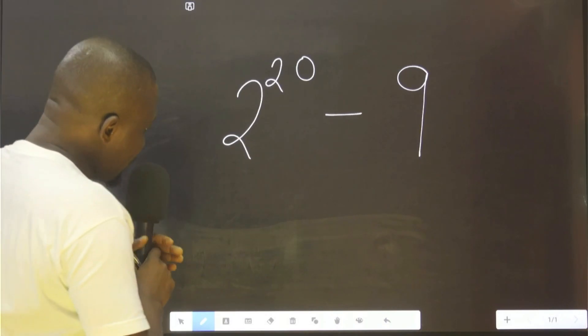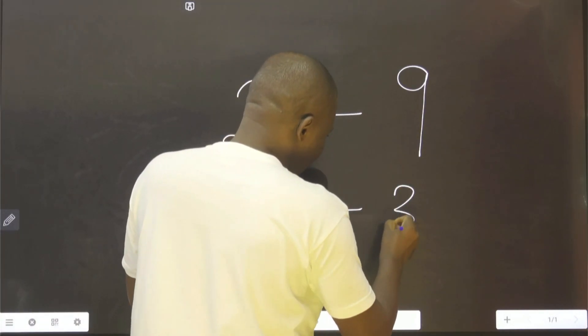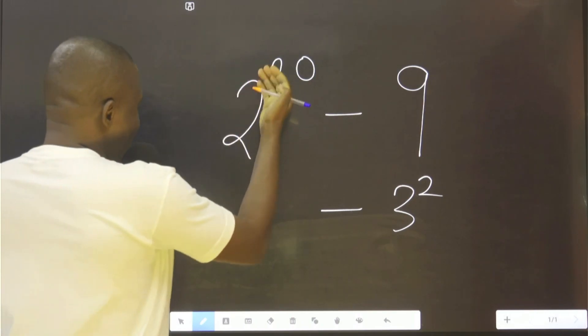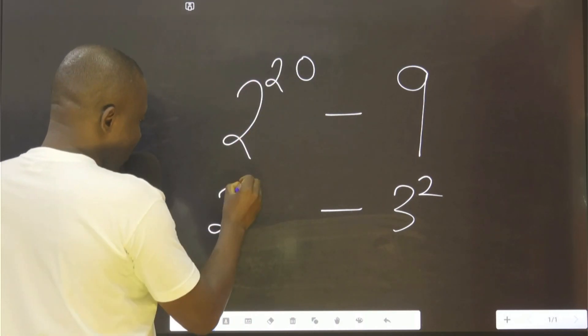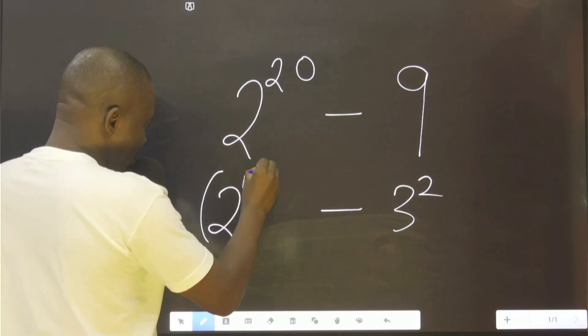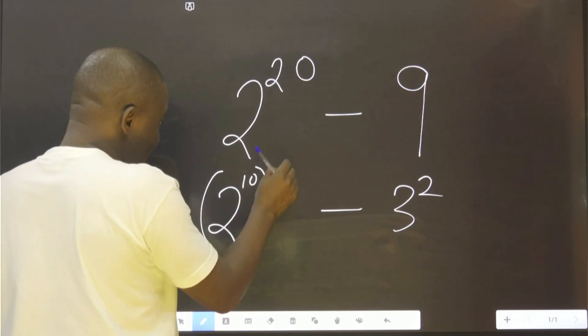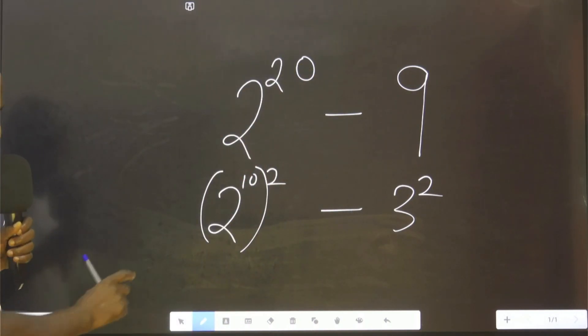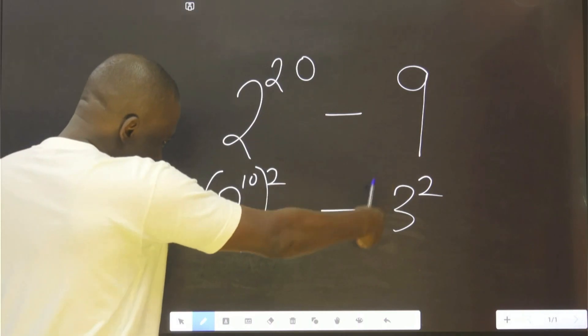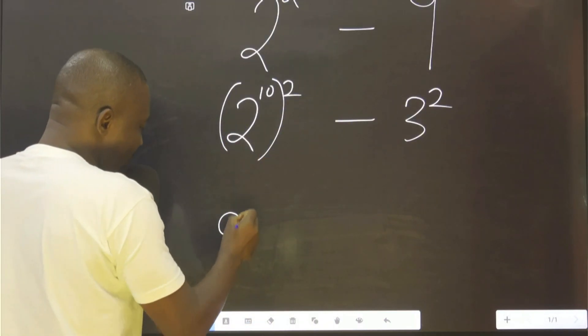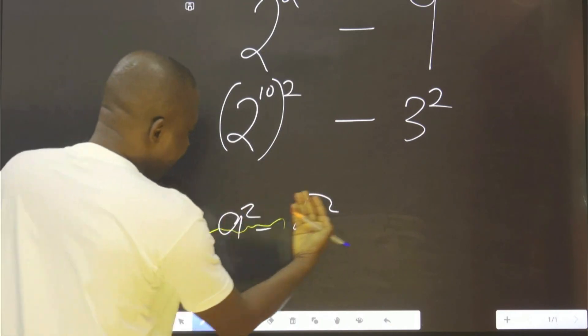So you agree with me, this is 3 raised to power 2. This one I can rewrite as 2^10 raised to power 2, because this multiplied by this will give us 20. So I can call this one a, I can call this one b.